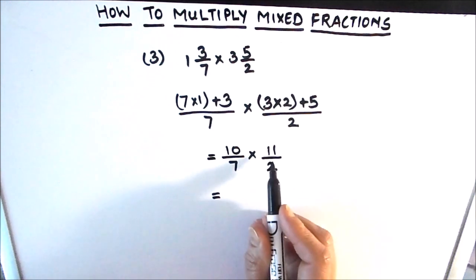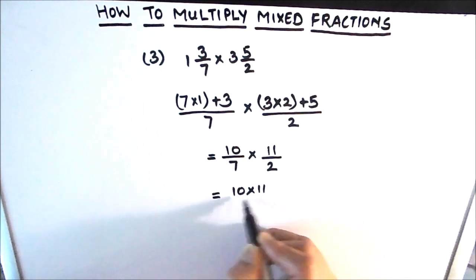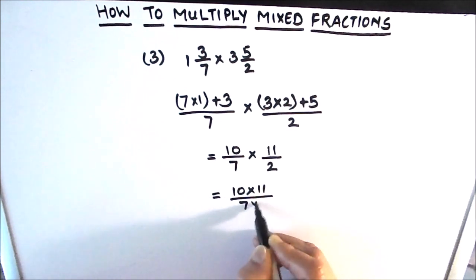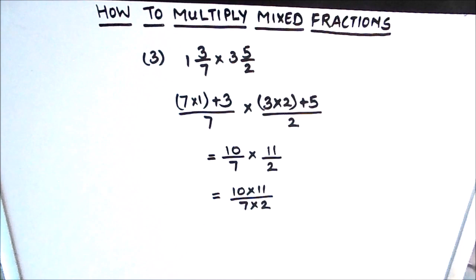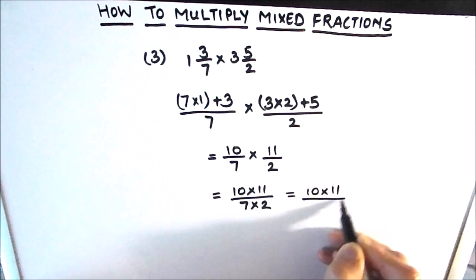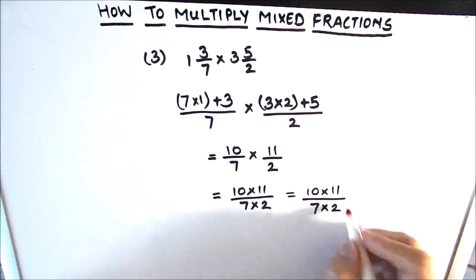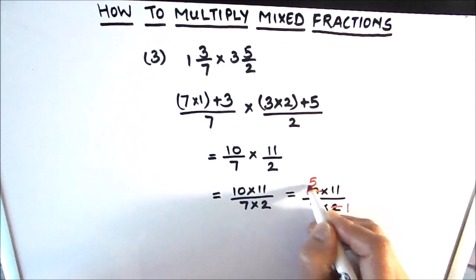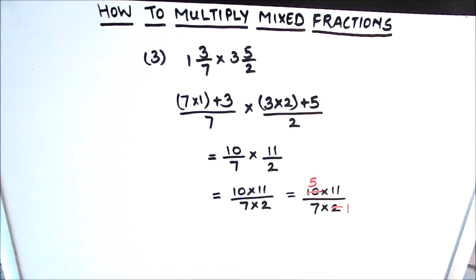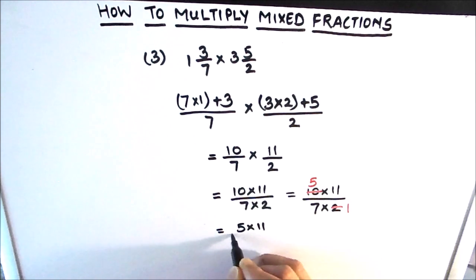We multiply the two numerators together and the two denominators together, giving us 10 times 11, divided by 7 times 2. Before multiplying, we check for a common factor between the numerator and denominator. We see that there is a common factor of 2: 2 times 1 is 2 and 2 times 5 is 10. So we simplify before multiplying, and our numerator becomes 5 times 11.